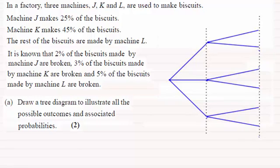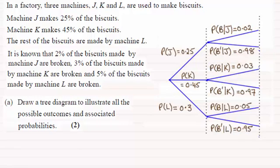So when you put the probabilities on, I feel it should look something like this. We're given the probability that machine J makes 25% of the biscuits so that's going to be 0.25 and the same with K, it's going to be 45%, 0.45. So you can get the third probability because all of these should add up to one.